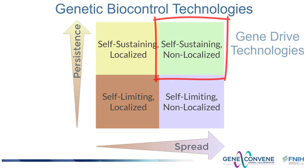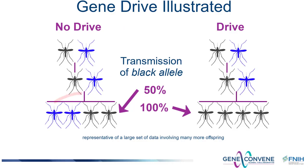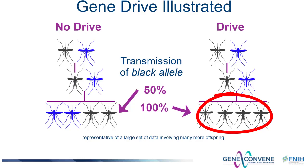Gene drive refers to the preferential transmission of an allele or chromosome to the next generation. This is simply illustrated here where the inheritance of the black allele of a gene shows no evidence of drive in the situation on the left, but does show evidence of drive in the example on the right. In the example on the right, the black allele is preferentially transmitted to the next generation — the black allele is driving and displays gene drive.